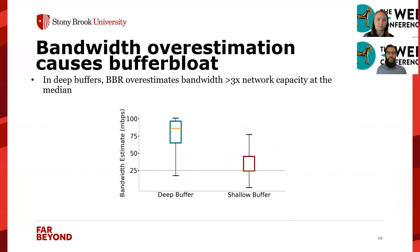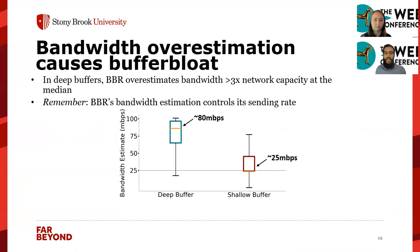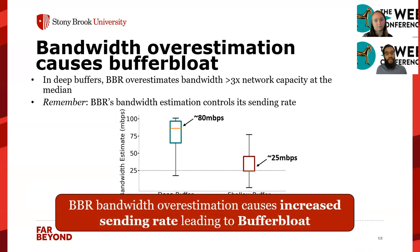Looking at BBR's bandwidth overestimation, we present a graph of BBR's bandwidth estimate on the y-axis and two different buffer sizes on the x-axis. Our network bandwidth is set at 25 megabits per second, shown as the dashed line. Under shallow buffers, we see a median bandwidth estimate of 25 megabits per second. But under deeper buffers, BBR overestimates bandwidth at about 80 megabits per second — greater than a 3x increase. Since BBR uses this bandwidth estimate to compute BDP and control its sending rate, overestimating bandwidth pushes its sending rate beyond network capacity, filling router queues and causing buffer bloat.